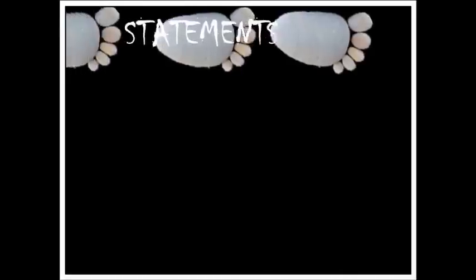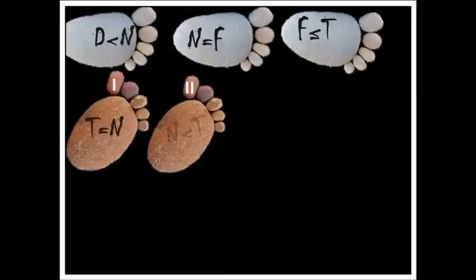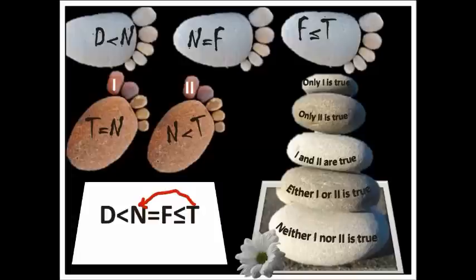Another set of statements with conclusions: t equal to n, and n less than t. Combined statement: d less than n equal to f less than or equal to t. First, t equal to n — draw a reverse arrow from t to n. Highest priority symbol between t and n: less than or equal to. In backward direction, read as t greater than or equal to n. So conclusion one fails.